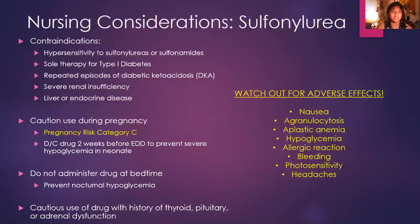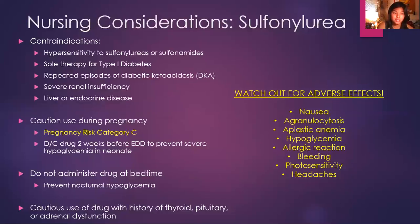Here are some nursing considerations with this drug class. Contraindications include hypersensitivity to sulfonylureas — if a patient has a history of being allergic to this drug class, it's a good idea to avoid it. Do not use it as sole therapy for type 1 diabetes. A contraindication would also be repeated episodes of diabetic ketoacidosis (DKA), severe renal insufficiency, or liver or endocrine disease. You may want to consult the primary care doctor if your patient has any of those contraindications.